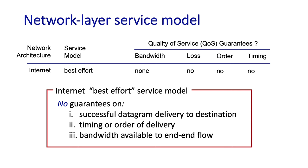The internet's network layer service model is known as best effort service. Under best effort service, transmitted packets are not even guaranteed to be delivered, much less delivered with bounded end-to-end delay or with some kind of minimum bandwidth guarantee.